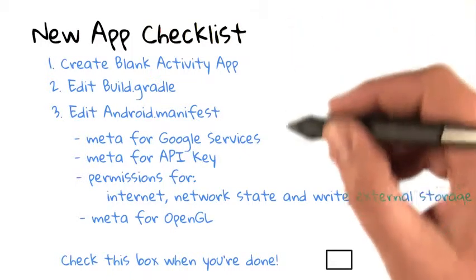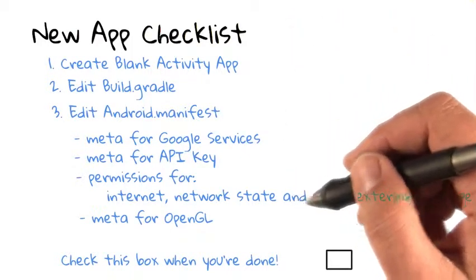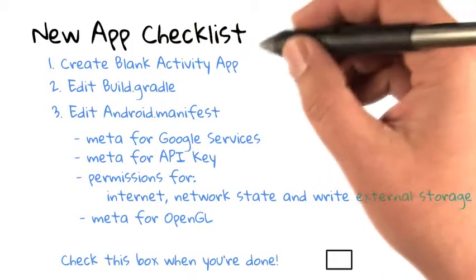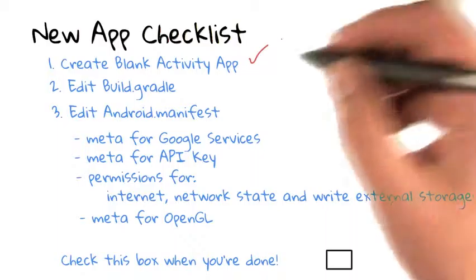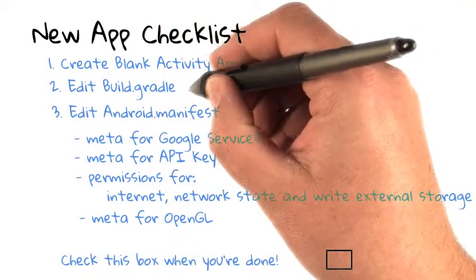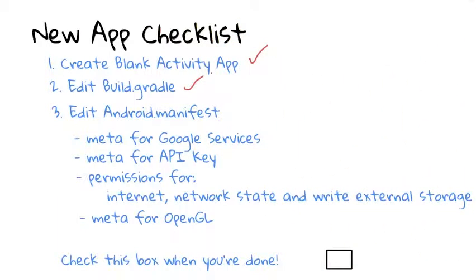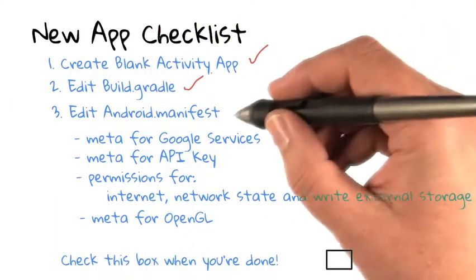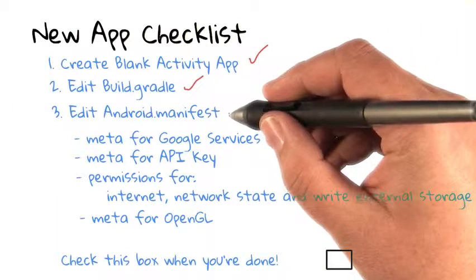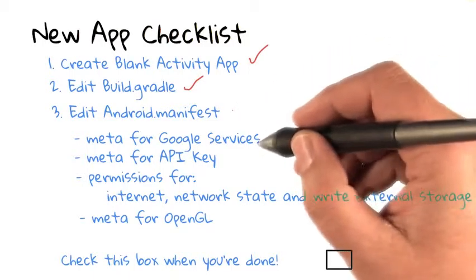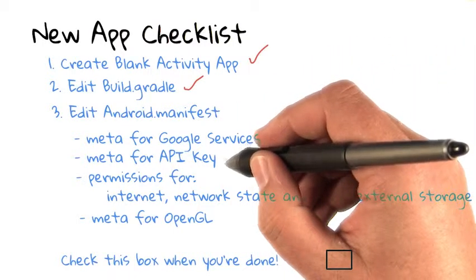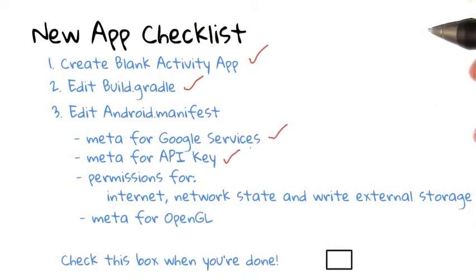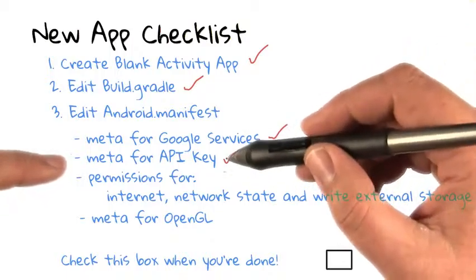To build this app, get started with the typical steps. First, you'll create a blank activity app. Then you'll edit your build.gradle to add the services libraries. Then you'll edit your Android manifest with the meta keys for the services libraries, and the metadata for your API key.